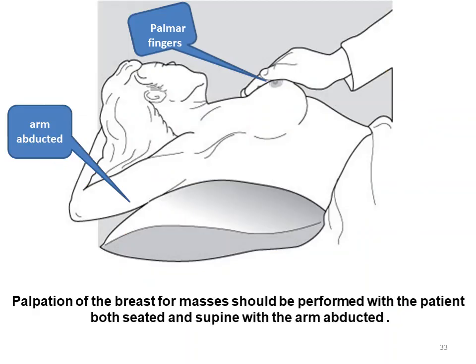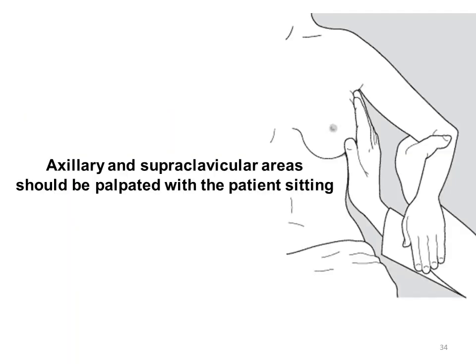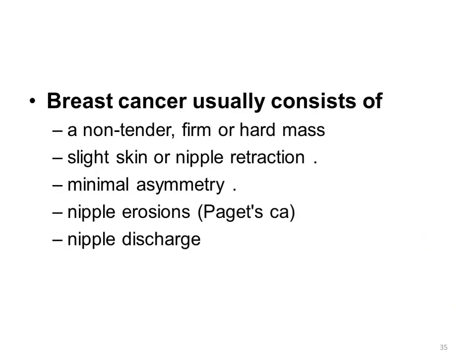Palpation is done with the patient supine and seated. We place a pillow below the shoulder of the breast being assessed, using the flat palmar aspect of the fingers. With the patient's hands abducted in a sitting position, we assess the axillary group of lymph nodes and the supraclavicular region as well. Breast cancer usually consists of a non-tender firm mass, nipple retraction, erosion, and asymmetry.